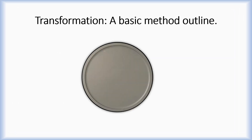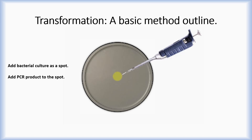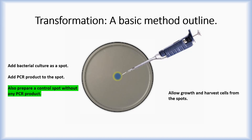First, cells are suspended in a broth. A portion of the cells are then spotted onto solid media. PCR product consisting of the final construct is added to the dried spot. It is important to prepare a control spot; the control spot has no PCR product added to it. Allow the cells to grow, and after a period of time, harvest the cells from the spots.